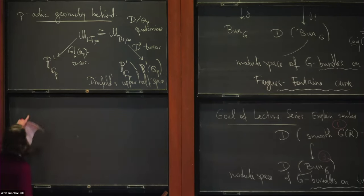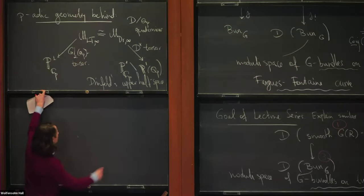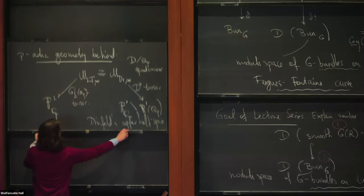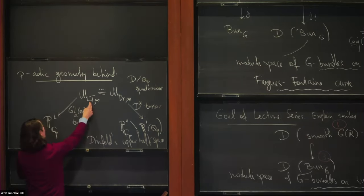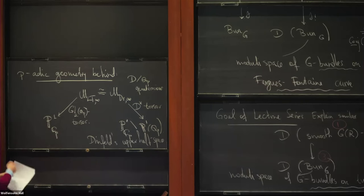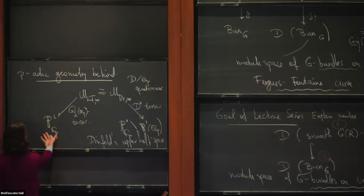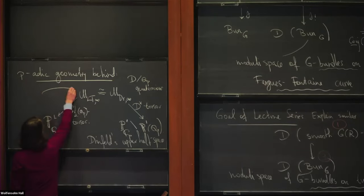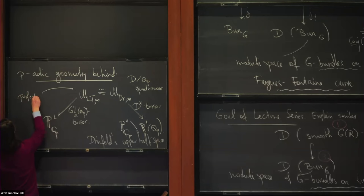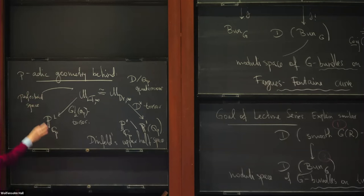It took a long time to be formalized nicely because these are highly infinite-type spaces: you have a torsor under a huge locally profinite group over some usual rigid space—some highly non-Noetherian space. What it actually is, is a perfectoid space. So you need rather fancy p-adic geometry to make sense of the objects intervening behind the scenes in this diagram.